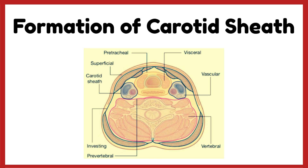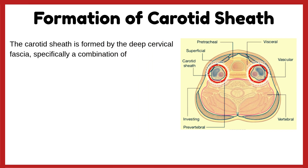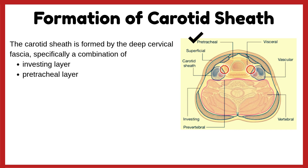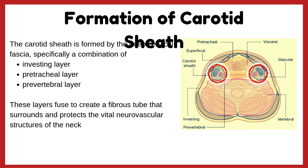The carotid sheath is formed by the deep cervical fascia, specifically a combination of the investing layer, the pre-tracheal layer, and the pre-vertebral layer of deep cervical fascia. These layers fuse to create a fibrous tube that surrounds and protects the vital neurovascular structures of the neck.